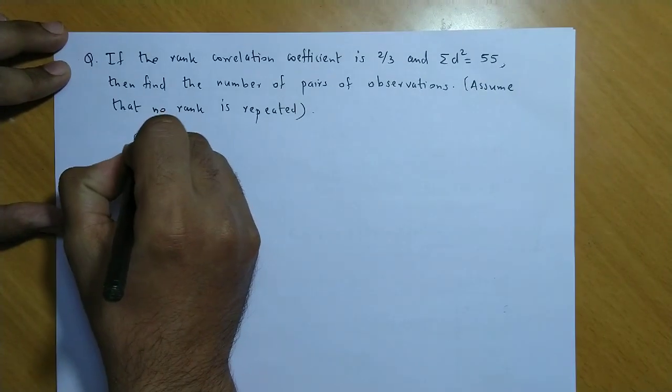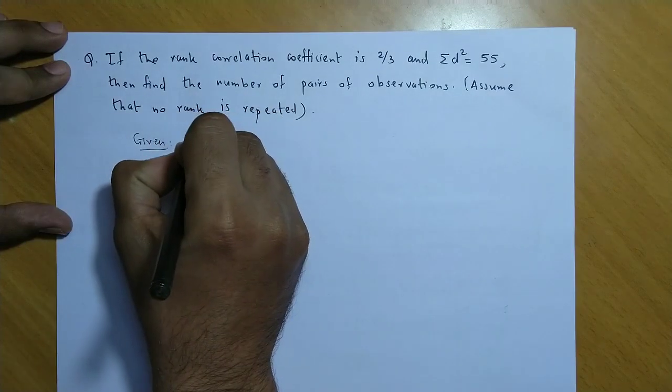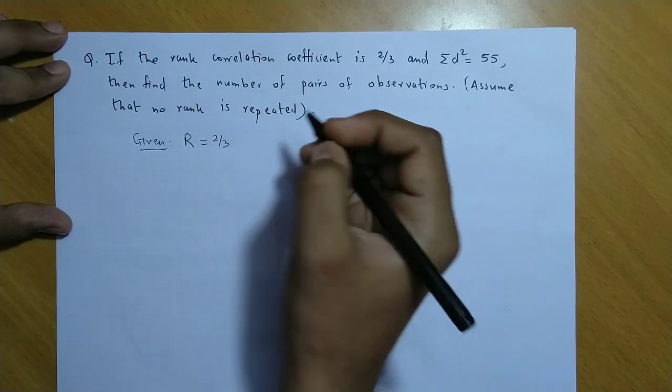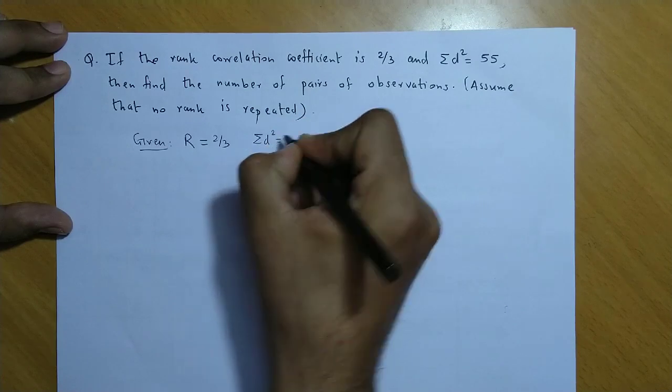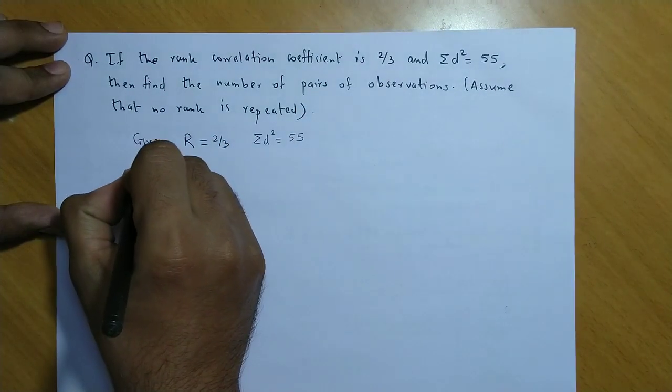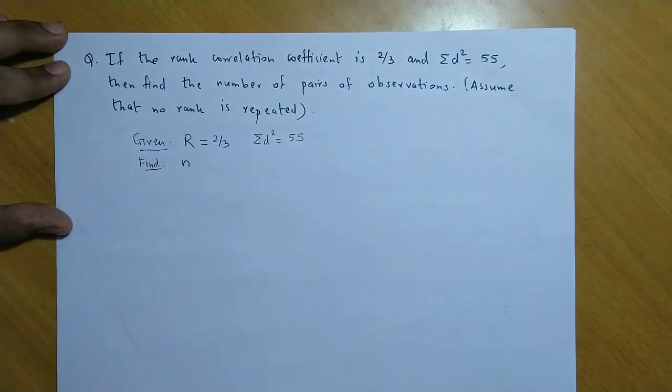So, pahle hum given data likh lete hai. Given data hai: R equal to 2/3, summation d square equal to 55. Aur hume find karna hai value n ki, yani ki number of observations.